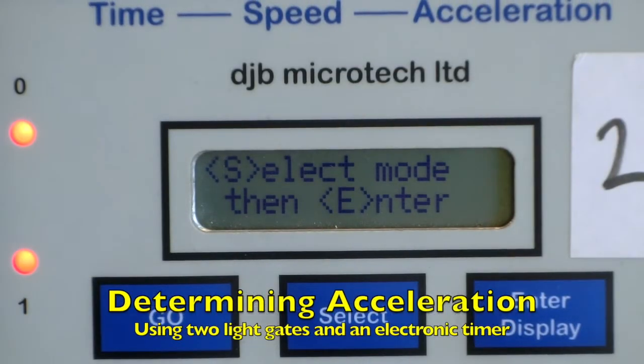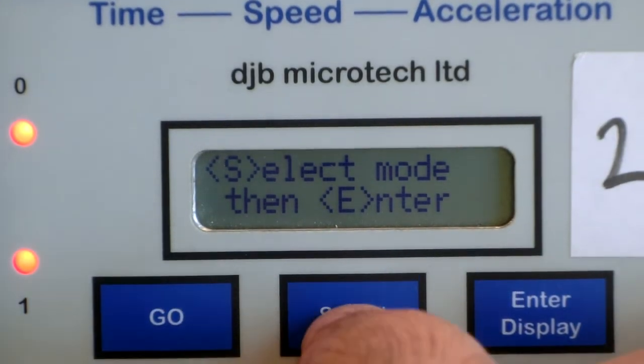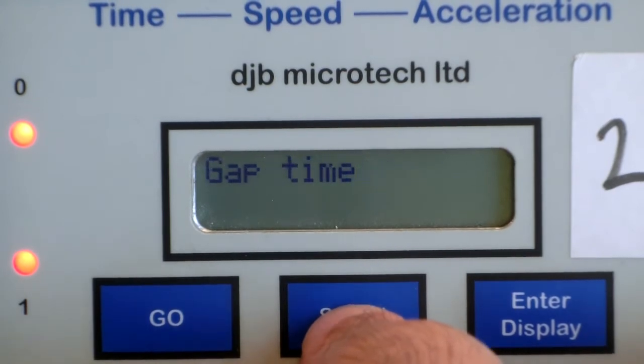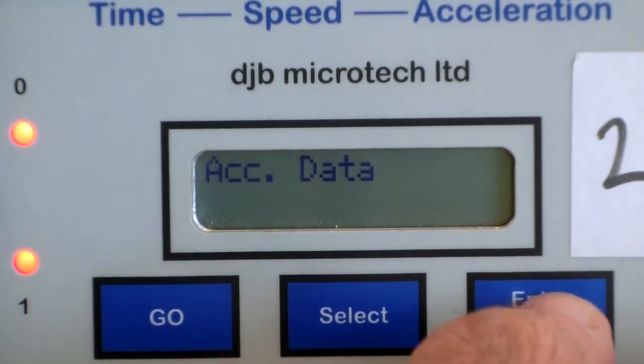Entering acceleration using two light gates and an electronic timer. First, program the timer to measure the data for acceleration.